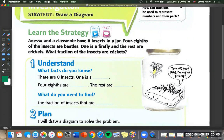So let's look at what we already know. There are eight insects. One is a firefly and four eighths are beetles. And the rest are crickets. And what do we need to find out? The fraction of insects that are crickets.